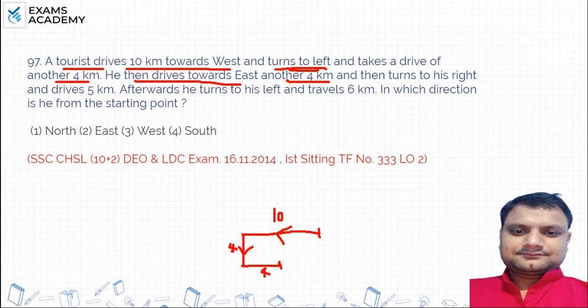He says, then turns to his right and drives 5 km. What will happen now? Now his right will turn down. And how did he go? 5 km. So, this is going to be 5 km in this position.